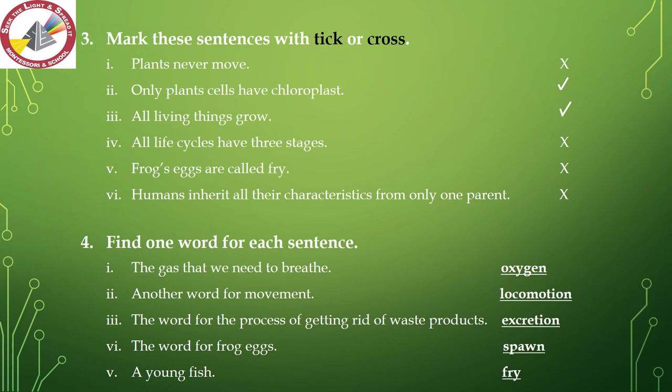Number 4 — all life cycles have three stages. Not all life cycles have three stages, so this is wrong — put a cross. Number 5 — frog eggs are called fry. This is wrong because fry is a baby fish; frog eggs are called spawn — put a cross. Number 6 — humans inherit all their characteristics from only one parent. Humans inherit characteristics from both parents — put a cross.